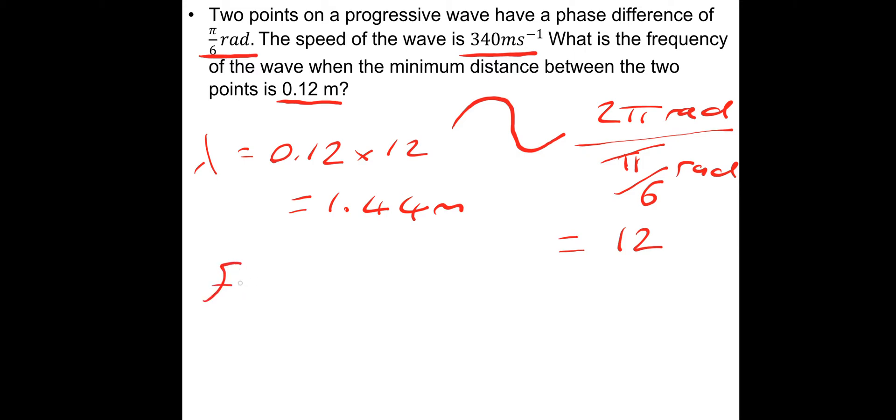Then frequency is simply the wave speed divided by the wavelength. So wave speed we've already got, 340, divided by the wavelength 1.44 meters, which gives a frequency of 236 hertz.